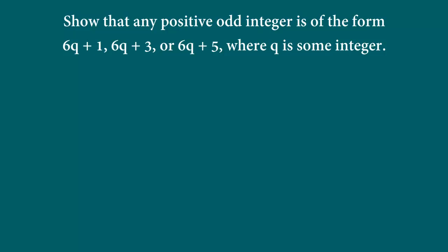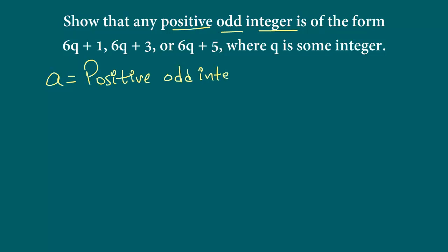So how does that help us solve this question? We are going to assume a is any positive odd integer. Now in order to apply Euclid's division lemma we have to divide a by b, so we have to pick a divisor. Euclid's division lemma states that a equals the divisor times quotient plus r. If we closely look at this and map it to all three forms, we notice that the divisor needs to be 6.